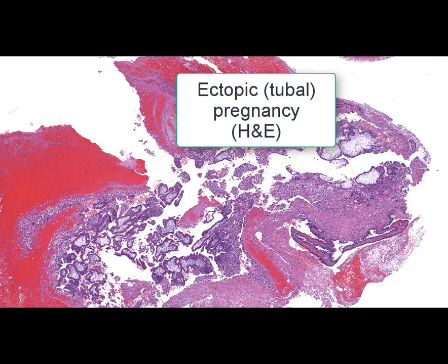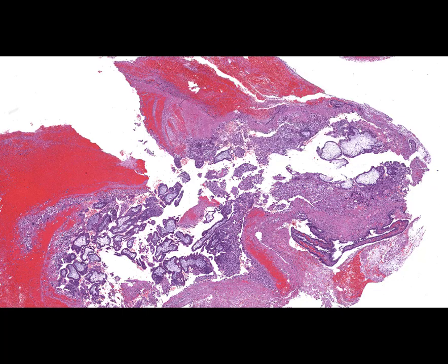On this slide we can see part of the fallopian tube, stained by hematoxylin and eosin. The name of the slide is ectopic tubal pregnancy. In ectopic pregnancy, the embryo attaches outside the uterine cavity, including in the fallopian tube, ovaries, abdominal cavity, uterine cervix, or rudimentary uterine horns.